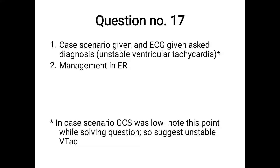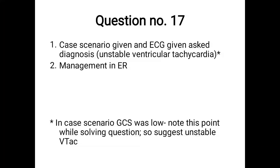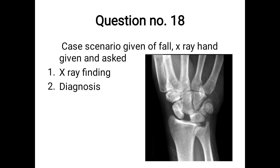Question 17: ECG and case scenario given. Diagnosis: unstable ventricular tachycardia. It was unstable because the GCS was on the lower side. Signs of instability include: hypotension, chest discomfort, altered sensorium, signs of shock, reduced urine output. ECG showed ventricular tachycardia and, due to low GCS, this is unstable VT. Management: synchronized cardioversion with 100 joules.